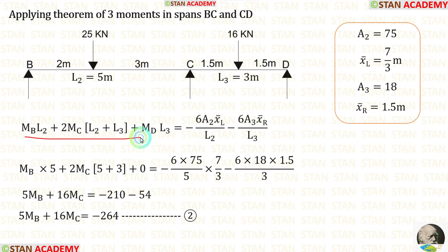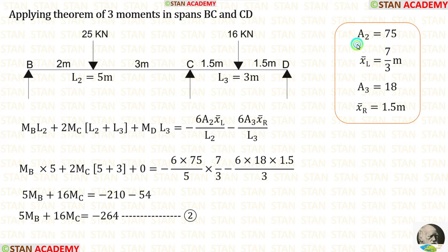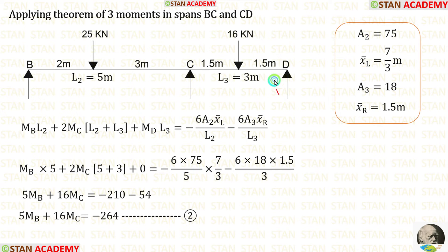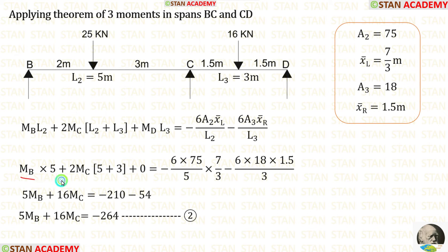Applying the values in the equation: L2 = 5, L3 = 3, area 2, x̄ left, area 3, and x̄ right are already calculated. At point D, there will be no moment because it is a simply supported end, so MD = 0. After calculations, we make the second equation.